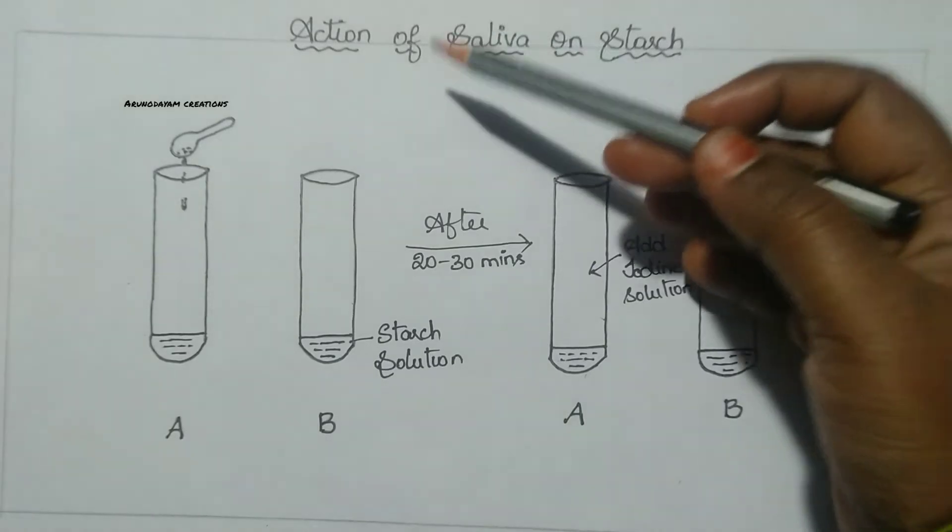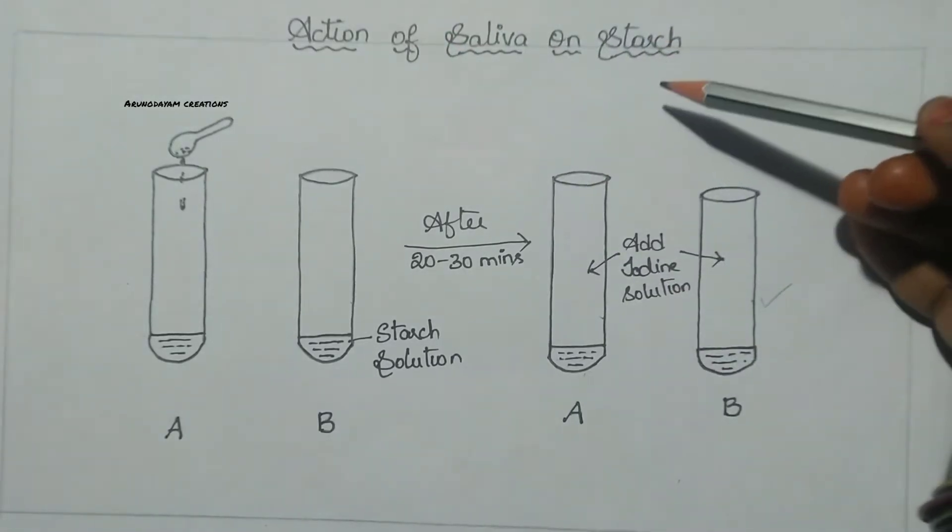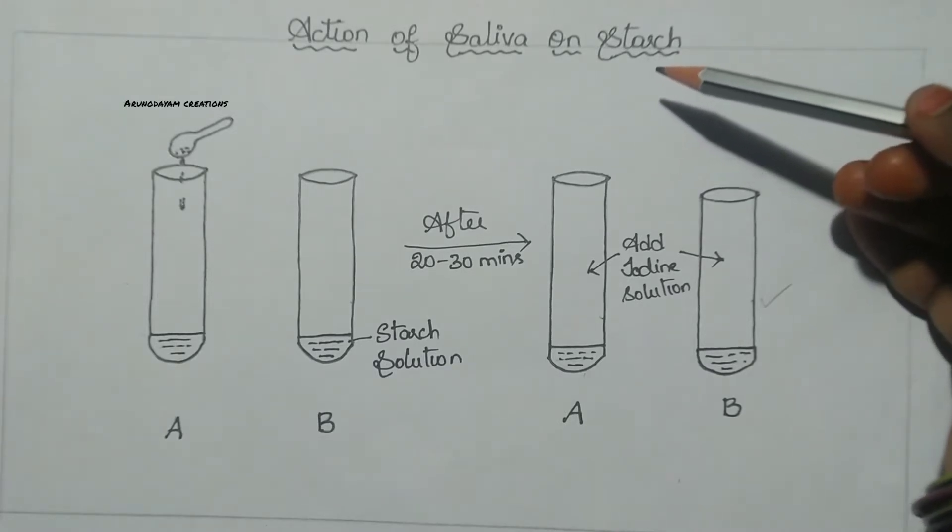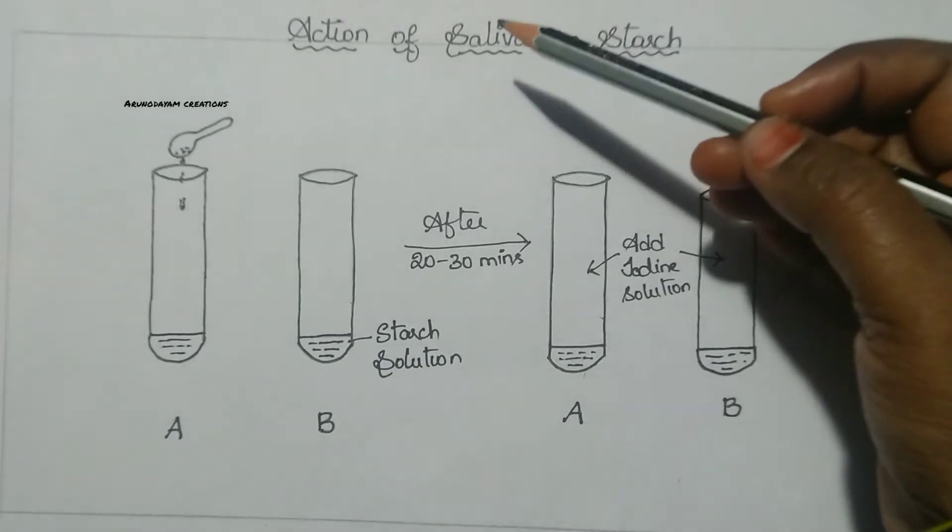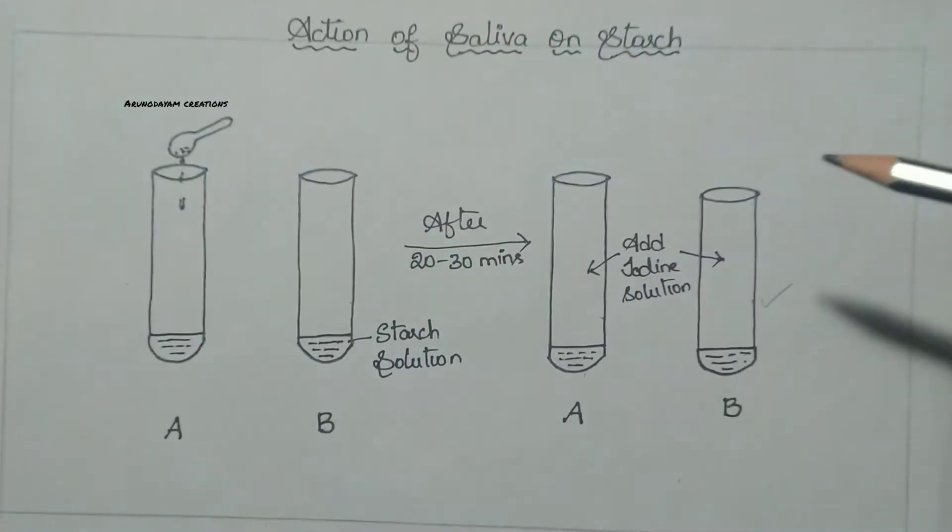So now in this video we are going to learn how this saliva is acting on starch. What is meant by starch? Starch is a complex carbohydrate which is present in food material. So how this saliva is acting on starch we are going to learn in this video.